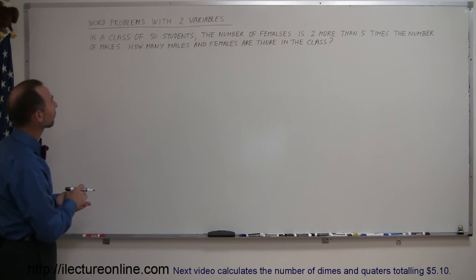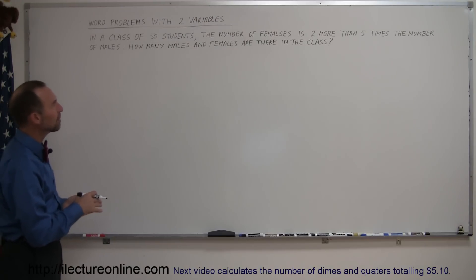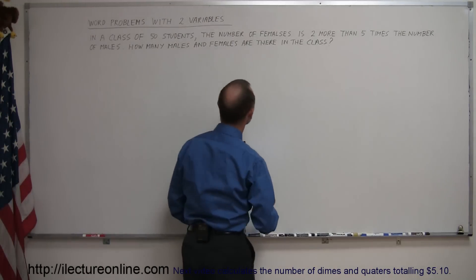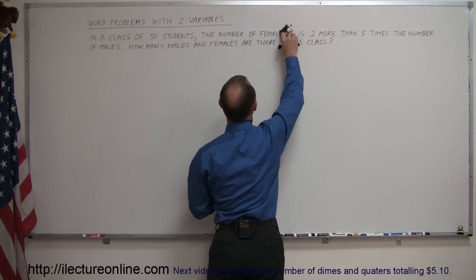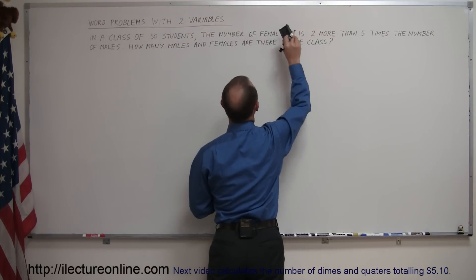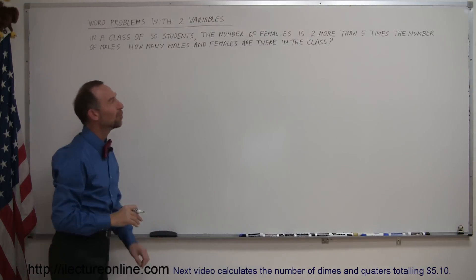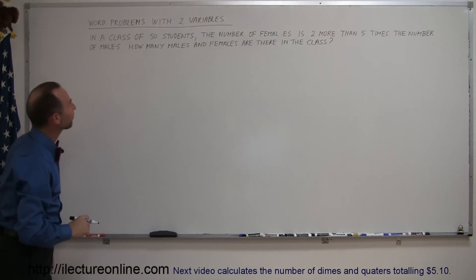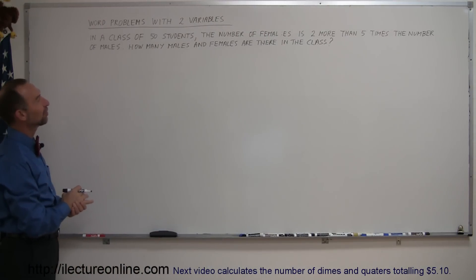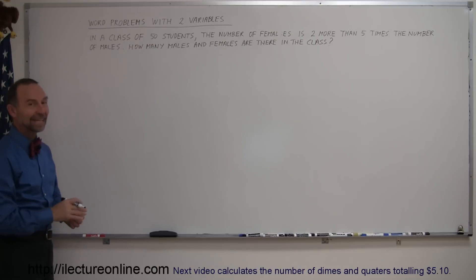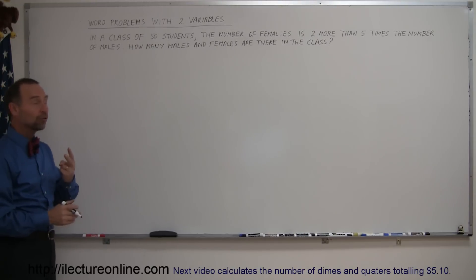The problem says: in a class of 50 students, the number of females is two more than five times the number of males. How many males and females are there in the class?